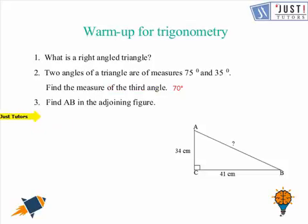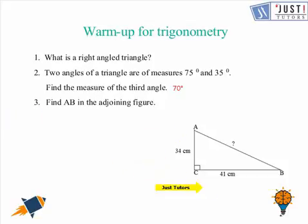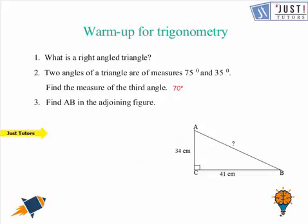Now let us move on to question number 3. That says to find AB in this adjoining figure. The dimensions of two sides are already given to us, that is 34 and 41 respectively. We need to work out AB and we can do that with the help of Pythagoras theorem. So the length of the third side is going to be 53.26 approximately. But don't forget to keep the unit, that is centimeters.